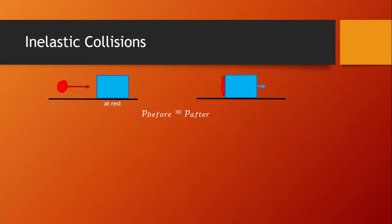The momentum of the flying blob of clay plus the momentum of the block at rest is going to equal the momentum of the block and blob of clay stuck together moving afterward. Let's write out the equation for momentum for each side. Beforehand there is a momentum of the clay — we'll call that m1v1 — and the momentum of the block, m2v2. Afterward, they move as one object, so the mass is the sum of the two masses, m1 plus m2, moving at some final speed.